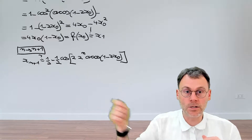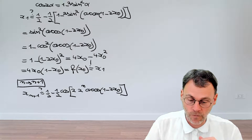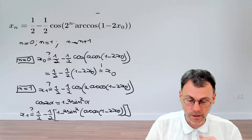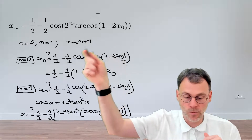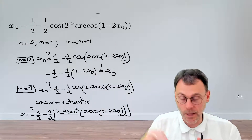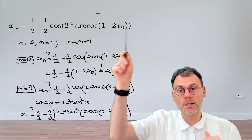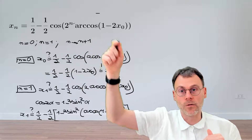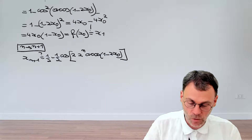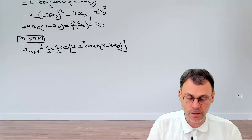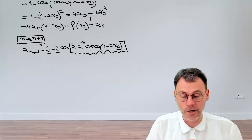Why? Because two to the power of n figures in the formula we assume is true — namely for n equal to n. So at the top, this two to the power of n arc cosine appears there, and we're going to assume that this holds. It's always nice to fall back on something known from that assumption.